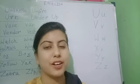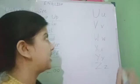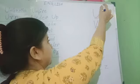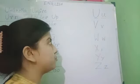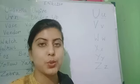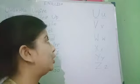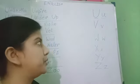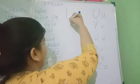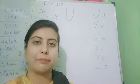Let's look at the first letter of today. That is U. This is capital U and this is small u. First, we will try to write them. Please look carefully. To write capital U, what you have to do is draw a curve like this. This is capital U.